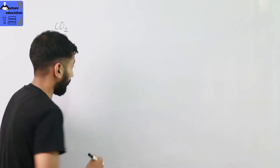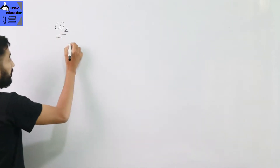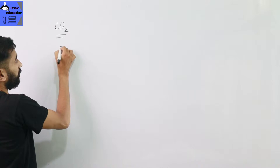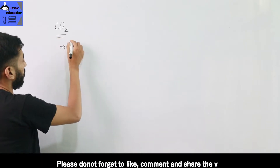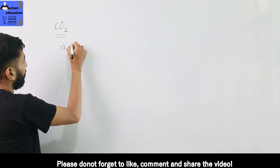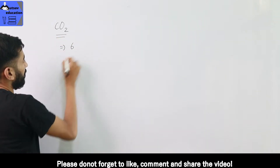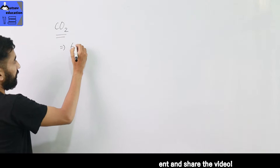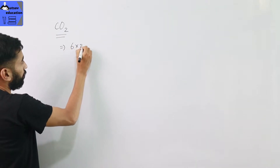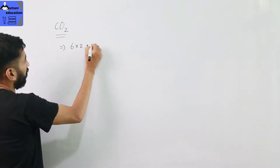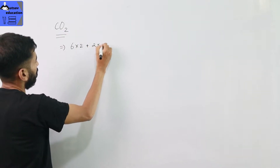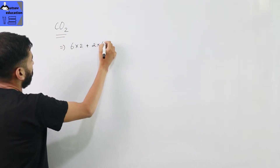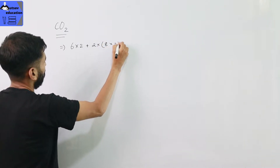Carbon has atomic number 6, with electron configuration 2 plus 4. Oxygen has atomic number 8, with electron configuration 2 plus 6. So combining carbon and oxygen gives us the structure of CO2.